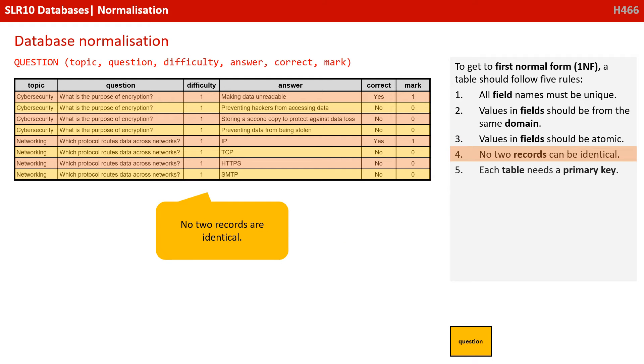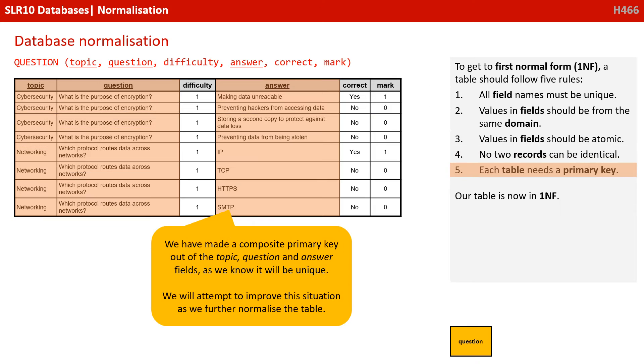Rule 4, no two records can be identical. Well, no two records are identical, so we've met rule 4. And rule 5, each table needs a primary key. So we've made a composite primary key here, out of the topic field, plus the question field, plus the answer field. As we know, for any combination of topic, question and answer, this will be unique. We'll attempt to improve this situation as we further normalize the table. But for now, we've met our rules and our table is in first normal form.